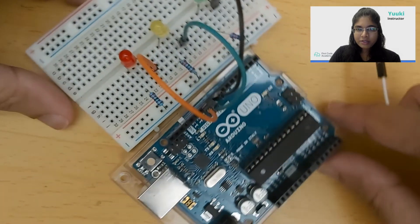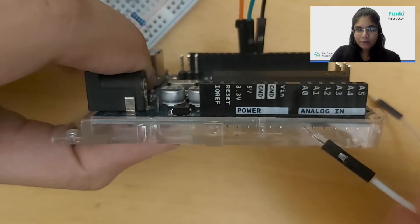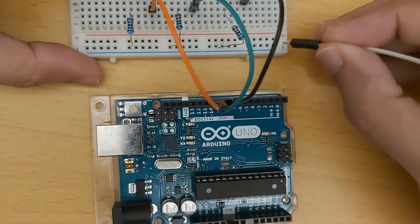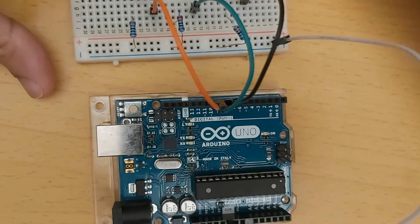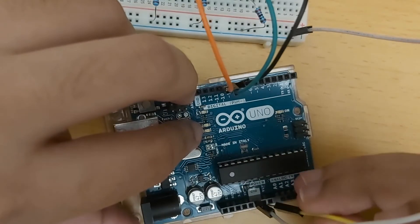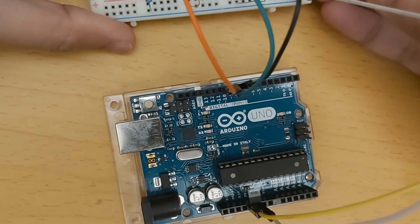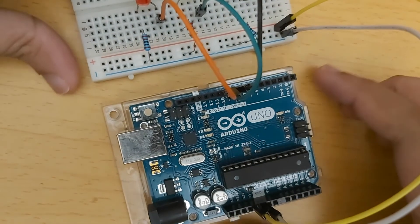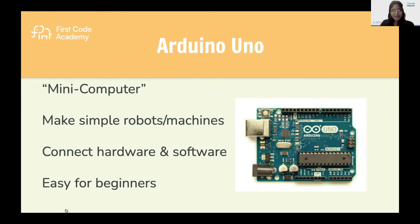Once I have connected my LEDs with the resistors and the Arduino pins, I need to complete my circuit. I'm going to connect the negative and positive rails of the breadboard to the ground pin and the 5V pin respectively on the Arduino Uno. Arduino is a mini computer used to make simple robots and machines — we can use it to connect a hardware circuit with software.